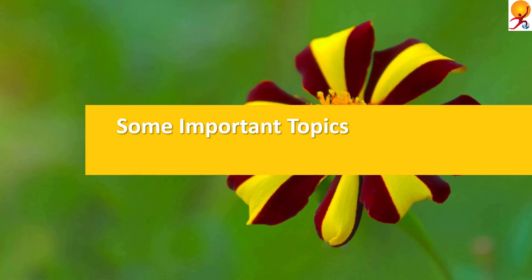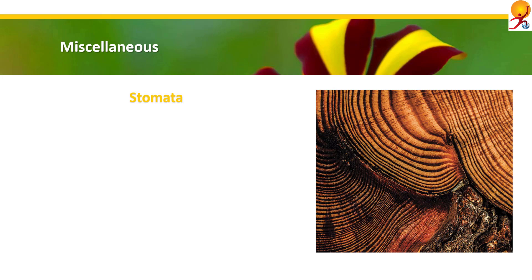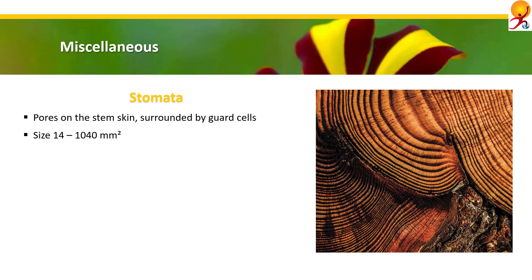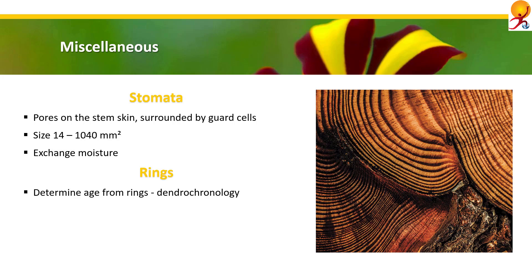Other important topics — Stomata: there exist various tiny openings called pores on the surface of the skin of stems and leaves, called stomata, which are surrounded by two kidney-shaped guard cells. In a leaf, the number of stomata varies from 14 to 1,040 per square millimeter. These stomata exchange moisture and help in transpiration activities.